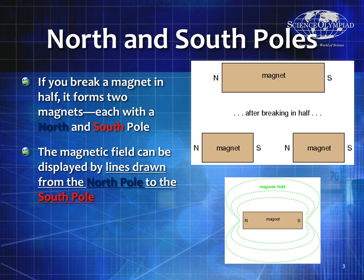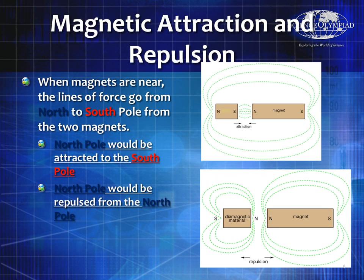It's very important that you put the arrows on the field lines to show that. When magnets are near, the lines of force go from north to south pole. A north pole is attracted to a south pole and a south pole is attracted to a north pole, as shown in the diagram to the upper right. However, two north poles or two south poles will actually repulse each other.